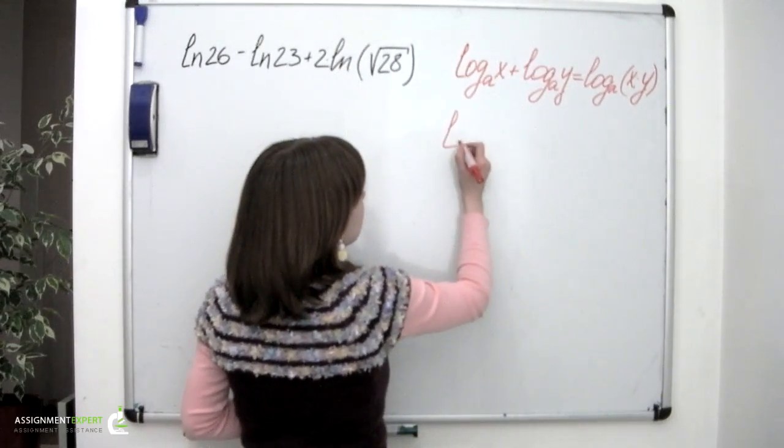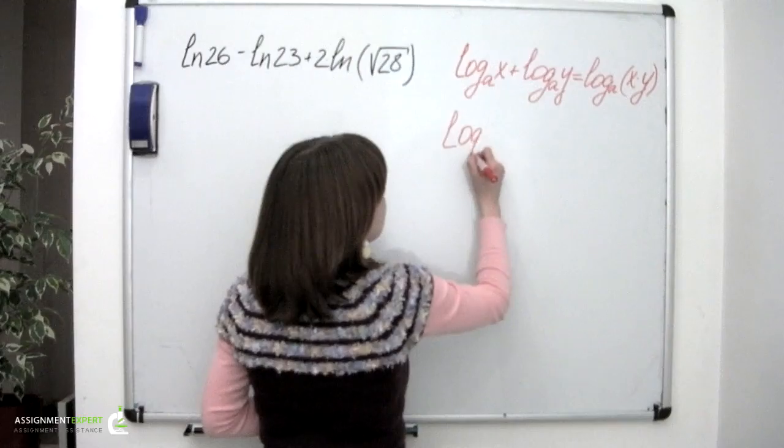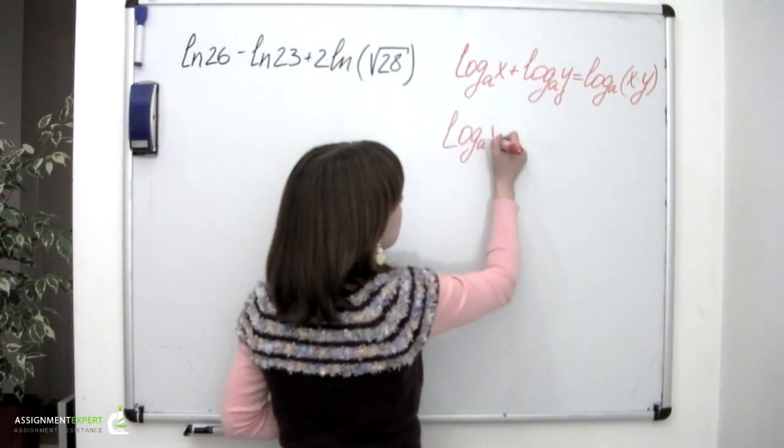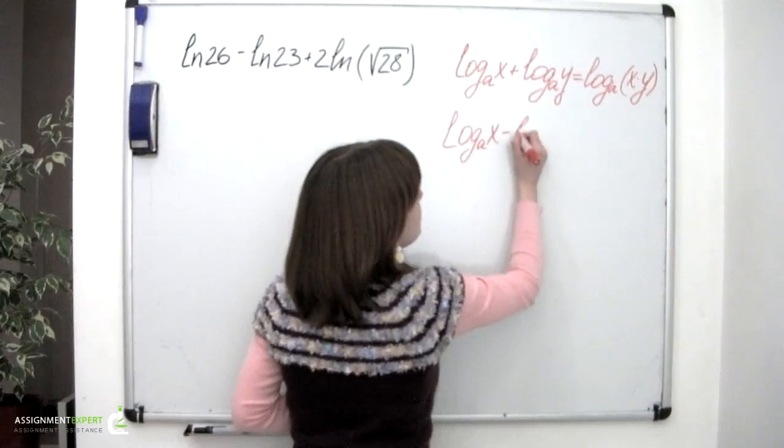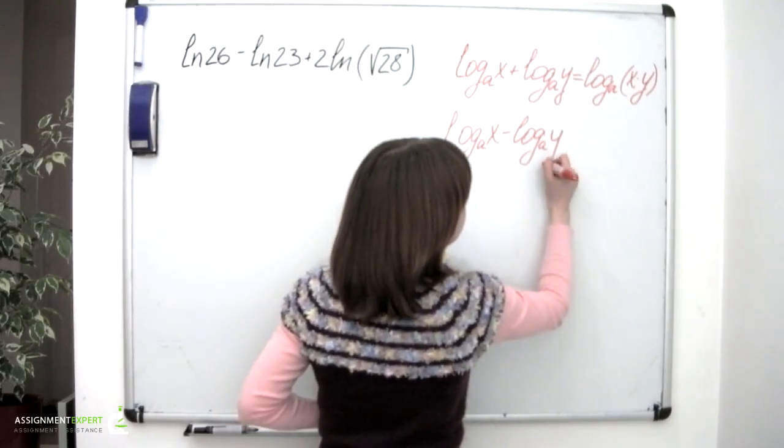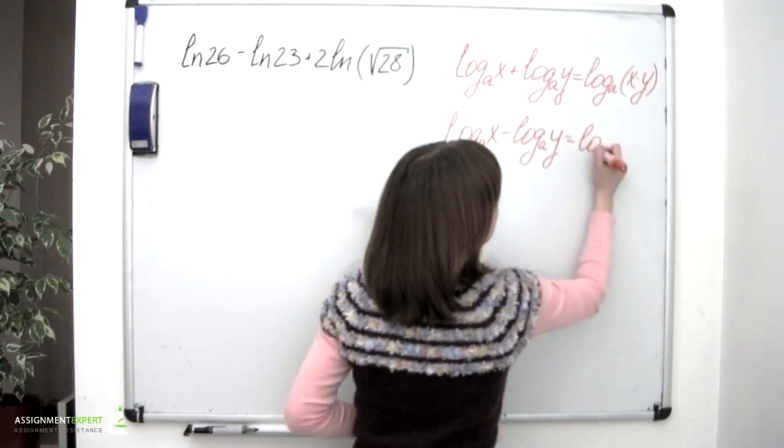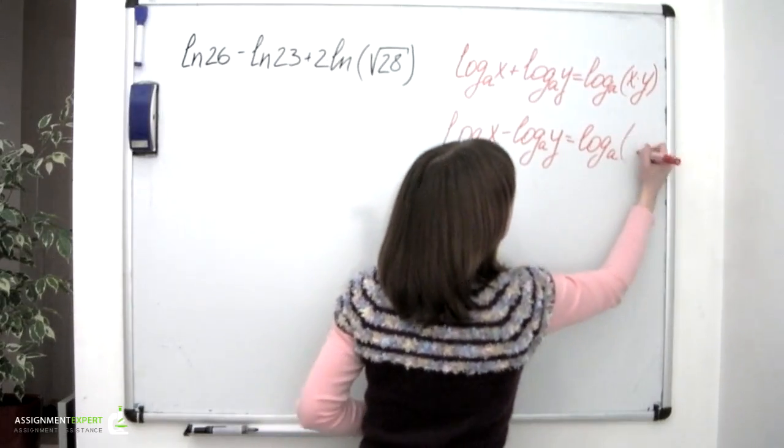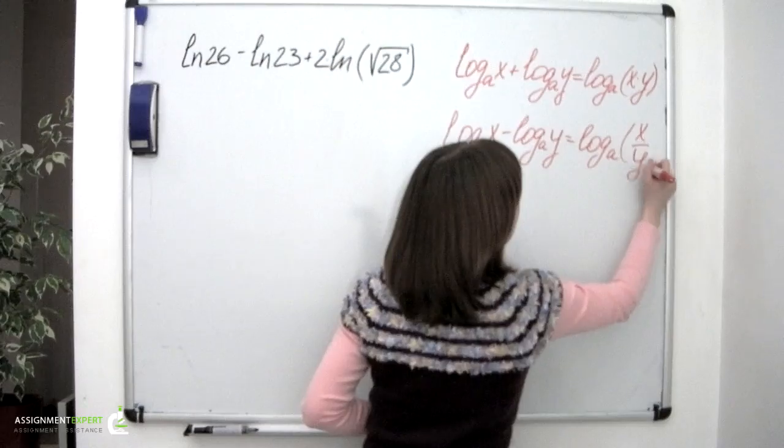Then there is a formula which says that logarithm base a of x minus logarithm base a of y is equal to logarithm base a of x divided by y.